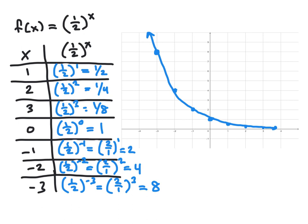Comparing this graph with the previous example, we see they have somewhat similar shapes but point in different directions. The graph of 1 half to the x gets smaller and smaller, approaching 0 as x gets larger, while the y values get larger as x gets more negative. In the previous graph of 2 to the x, the exact opposite occurred: as x got large, so did the function values, and as x got more negative, the function values approached 0. These two graphs are representative of all exponential functions — every exponential function's graph has the same general shape as one of these two.